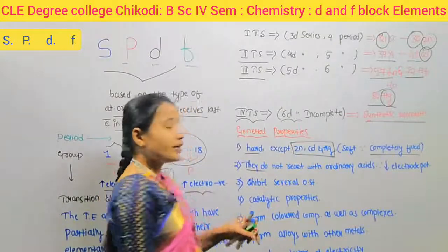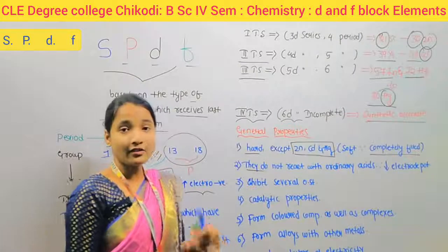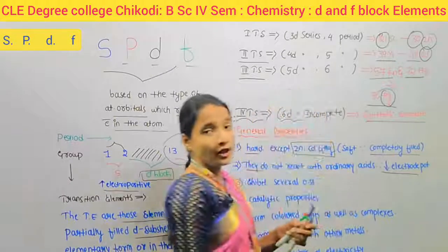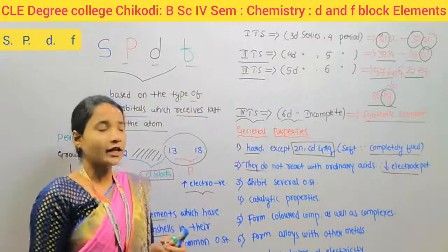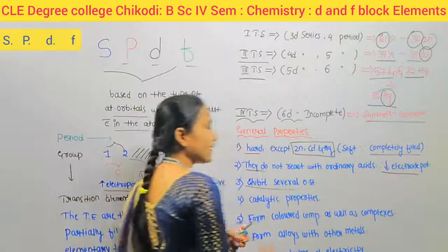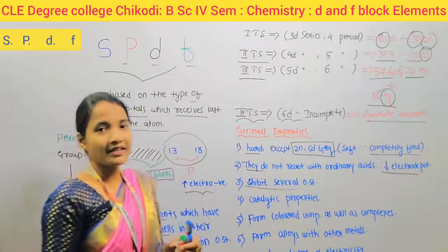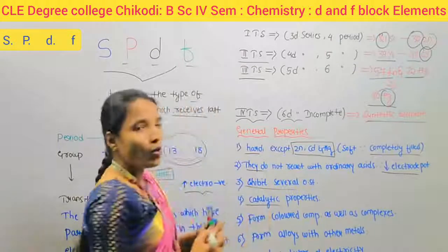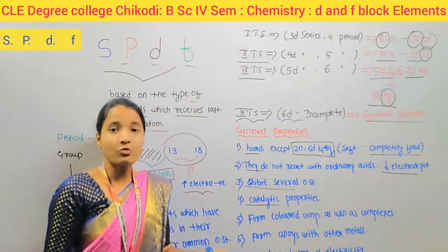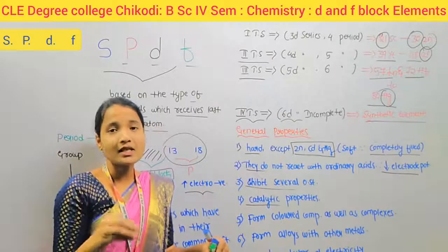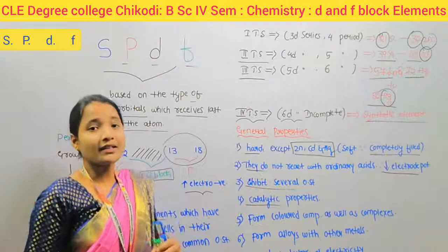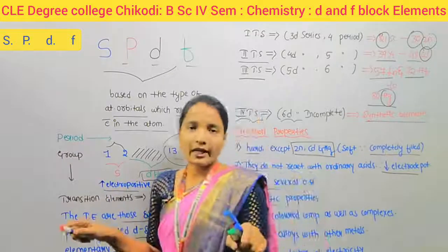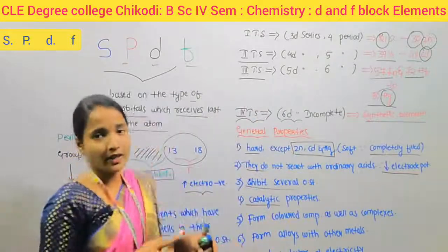D-block elements do not react with ordinary acids because of their low electrode potential. They also exhibit several oxidation states. They show catalytic properties, which is why most D-block elements are used as catalysts in chemical reactions.